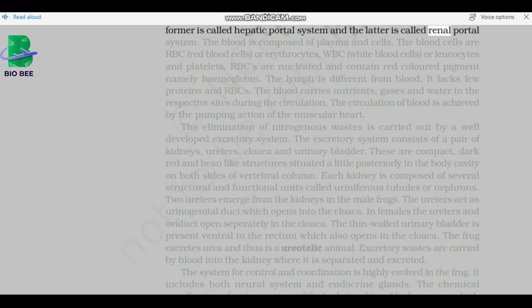The blood is composed of plasma and cells. The blood cells are RBC, red blood cells or erythrocytes, WBC, white blood cells or leukocytes and platelets. RBCs are nucleated and contain red colored pigment namely hemoglobin. The lymph is different from blood. It lacks few proteins and RBCs. The blood carries nutrients, gases and water to the respective sites during the circulation. The circulation of blood is achieved by the pumping action of the muscular heart.